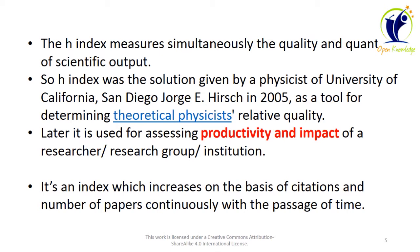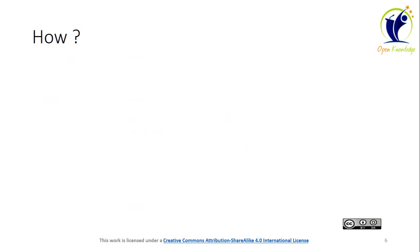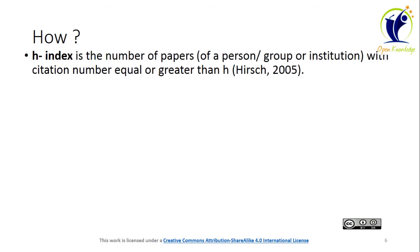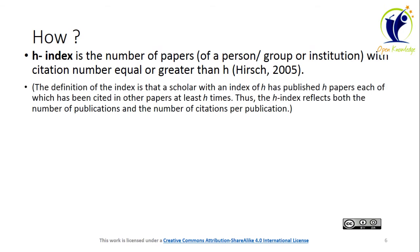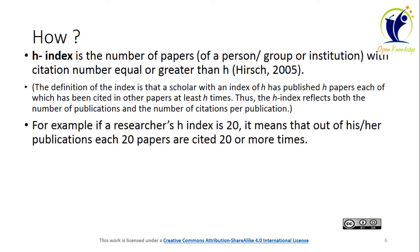Let's move to how H-Index is determined. H-Index is the number of papers of a person, group, or institution with a citation number equal to or greater than H. A scholar with an index of H has published H papers, each of which has been cited in other papers at least H times. Thus, the H-Index reflects both the number of publications and the number of citations per publication. For example, if a researcher's H-Index is 20, it means that out of his or her publications, 20 papers are cited 20 or more times.